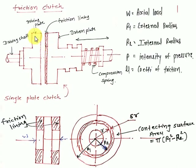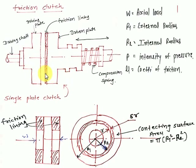Power is transmitted by the driving plate connected with the driven plate by means of a compression spring. Friction lining material is fixed with the driven plate. When the driving plate and driven plate join together, power will be transmitted. Now here are a few terms: W is the axial load.